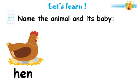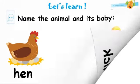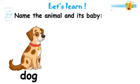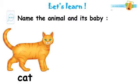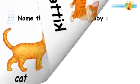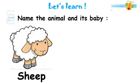This is a hen and its baby is chick. This is a dog and its baby is the puppy. This is the cat and its baby is the kitten. This is a sheep and its baby is the lamb.